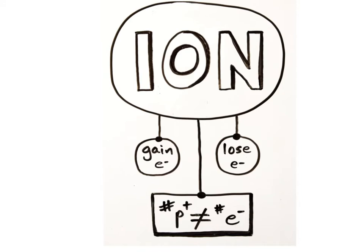If an atom gains one or more electrons, it becomes a negatively charged ion. If an atom gains one electron, its charge is now negative 1. If it gains two electrons, its charge is now negative 2.